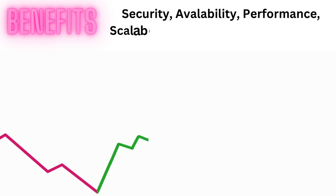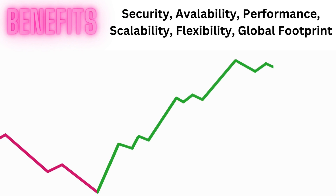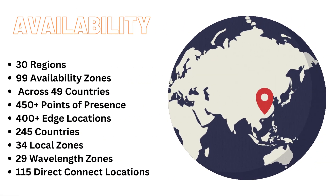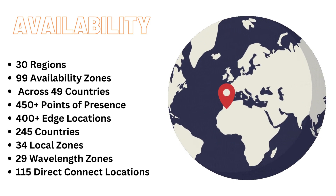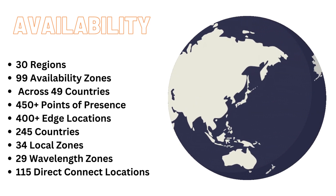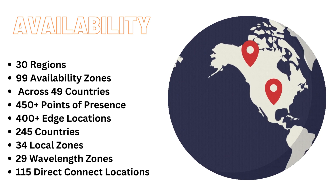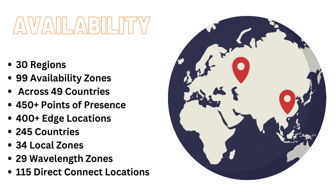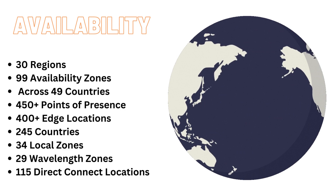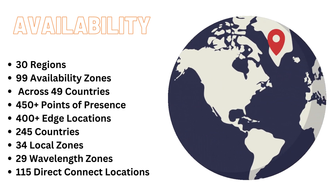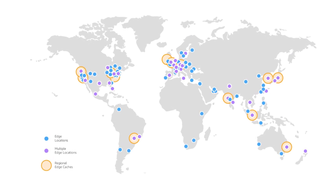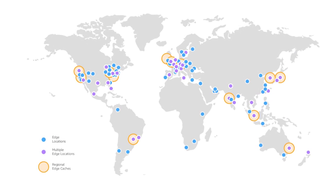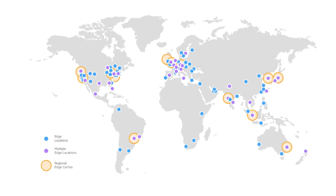Today, about 40% of cloud-hosted services rely on AWS to host their applications. AWS operates a vast global infrastructure of data centers to ensure high availability and low latency for all of their services. It spans regions, availability zones, and edge locations worldwide. Regions represent geographical areas with multiple availability zones, while availability zones are isolated data centers within a region. Edge locations bring content closer to end users for improved performance.